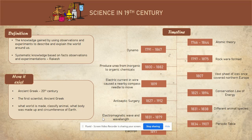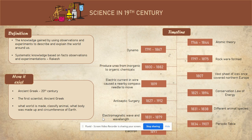Firstly, science in the 19th century. Most of you must know what science is. To be more specific, science is knowledge that can be gained by doing experiments in order to prove the observations that have been made. Science exists starting from ancient Greece until now, formed by those who tried to explain what the world is made of and how it works.